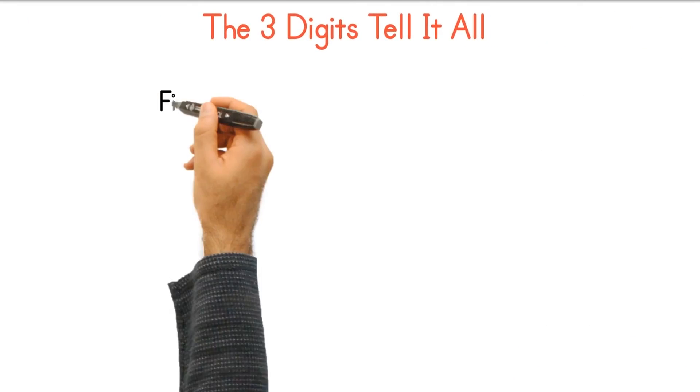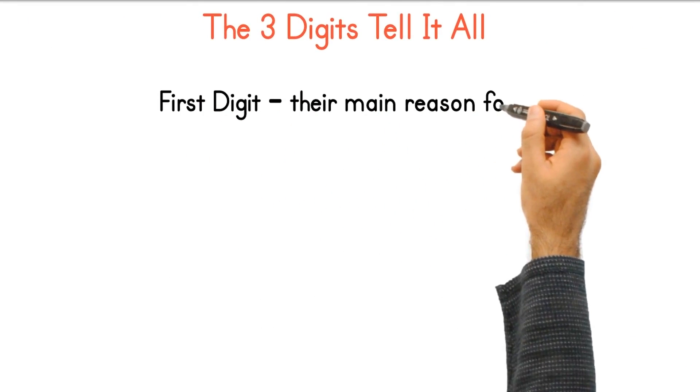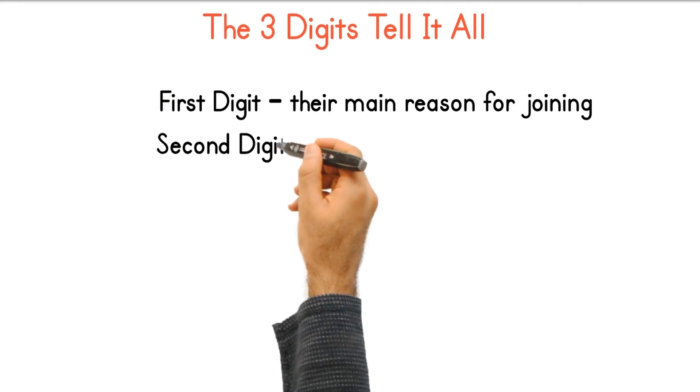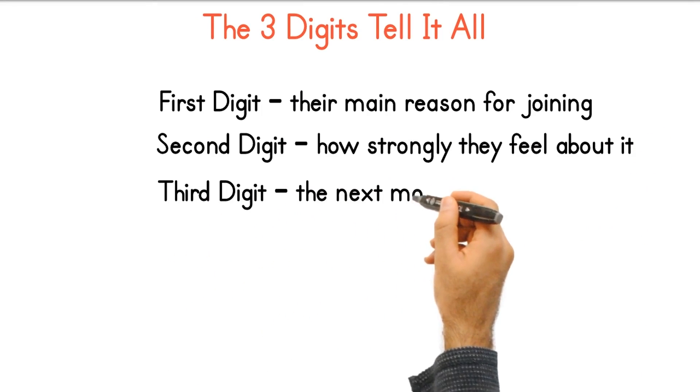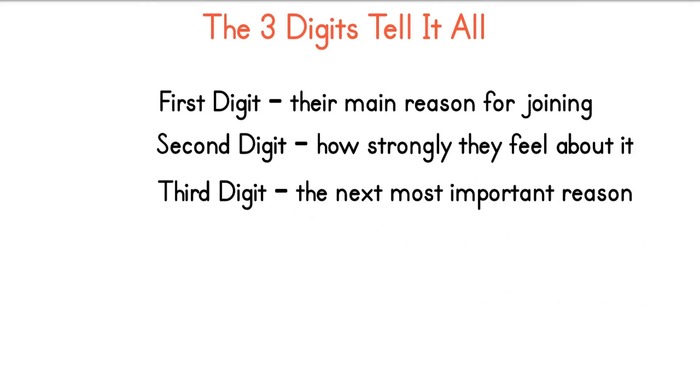The three digits tell it all. First digit: their main reason for joining. Second digit: how strongly they feel about it. Third digit is the next most important reason. Example: 387 is shaper, 80 points, altruistic.